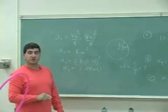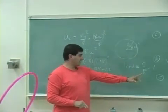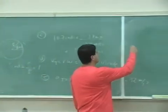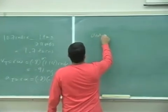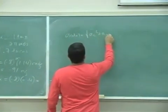And then a total acceleration, remember we've done that before, is this squared plus that squared square root. So a total is the square root of a centripetal squared plus a tangential squared.